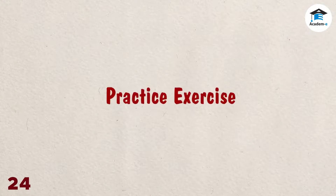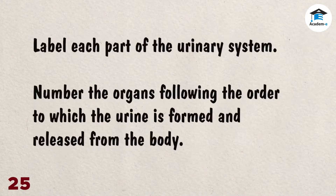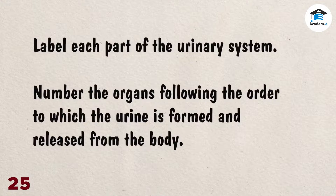Practice exercise. Answer the following questions. Label each part of the urinary system. Number the organs following the order in which the urine is formed and released from the body.